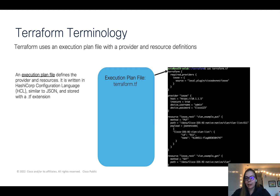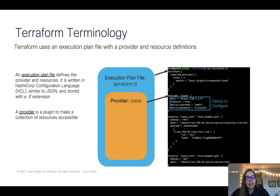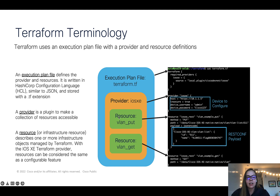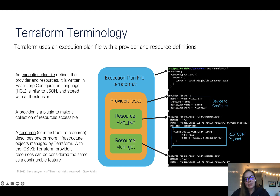This is an example Terraform file. We have a provider, which is a plugin or essentially a collection of resources that we want to become accessible. In our case, our provider is the iOS XE provider, and we want to configure a particular device. Next, we have resources to define what we actually want to do and configure on this device. A resource describes something we want to change or configure — in the case of iOS XE, think of resources as features. In this case, we have a VLAN that we'd like to create, with the RESTConf payload. Afterwards, we can get all of our VLANs on the device.